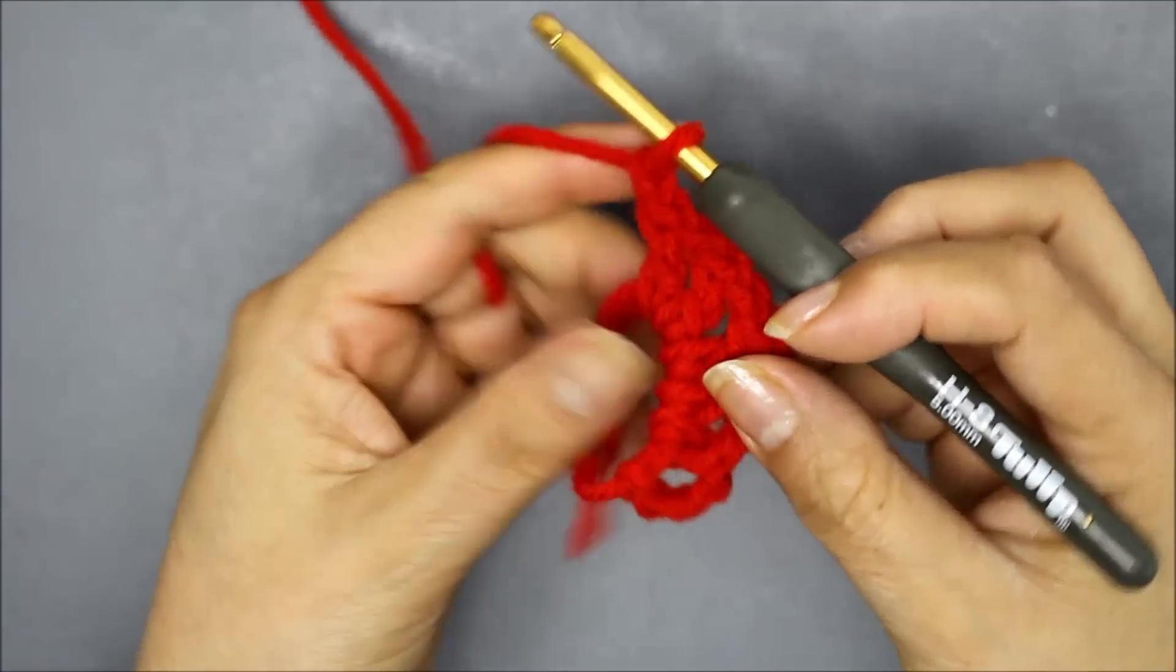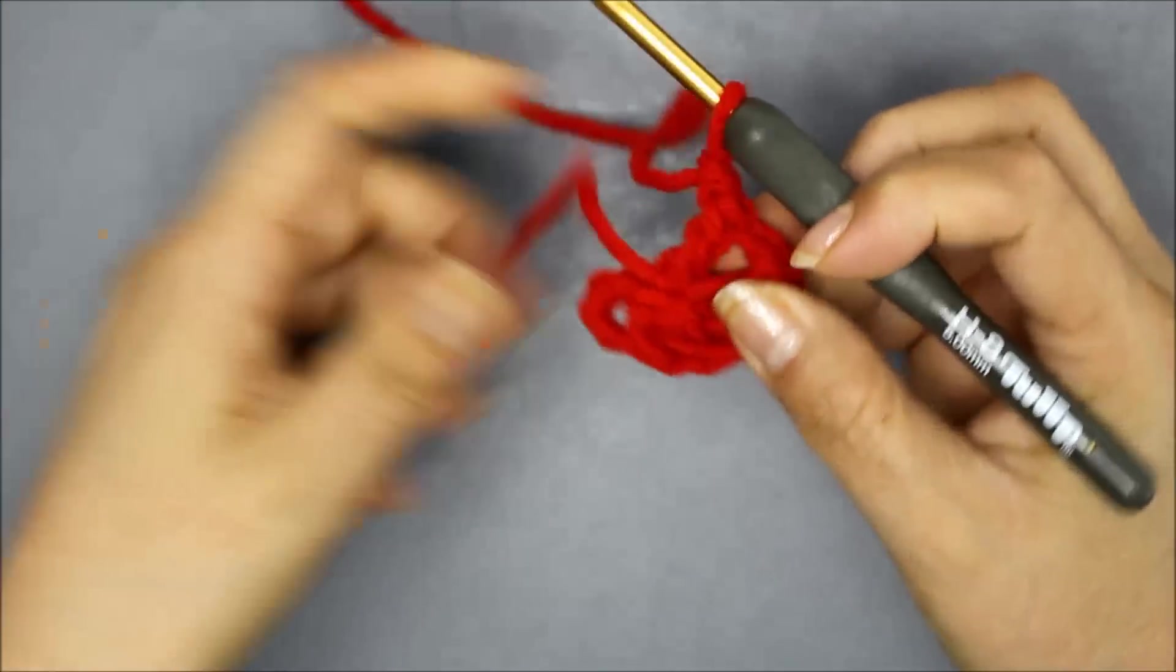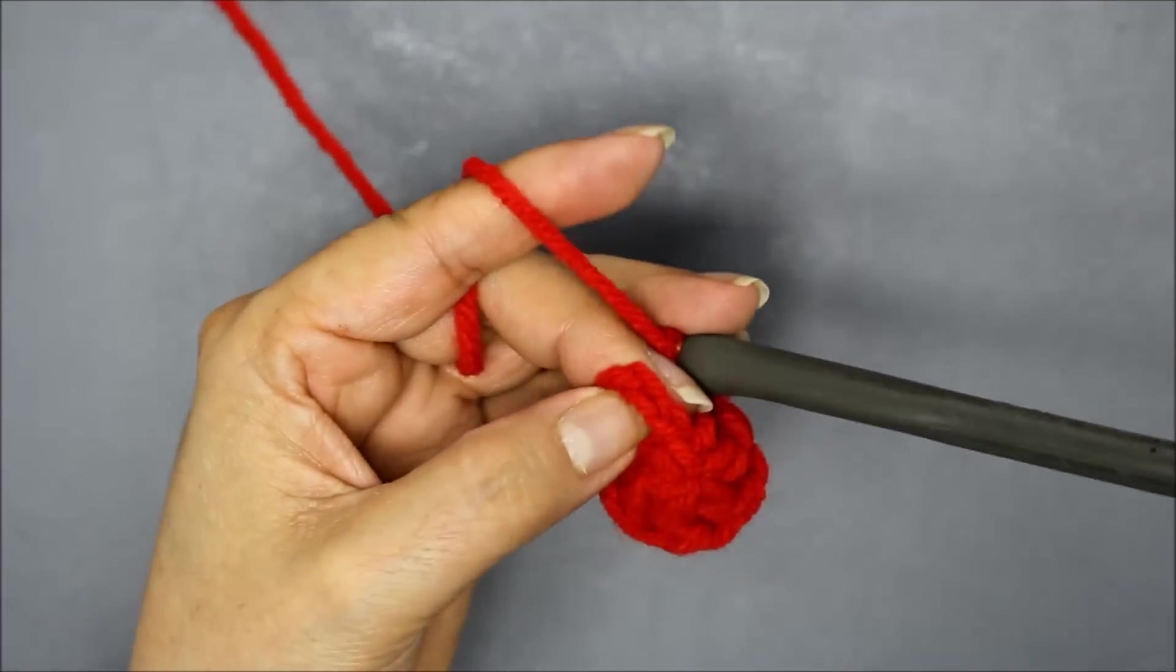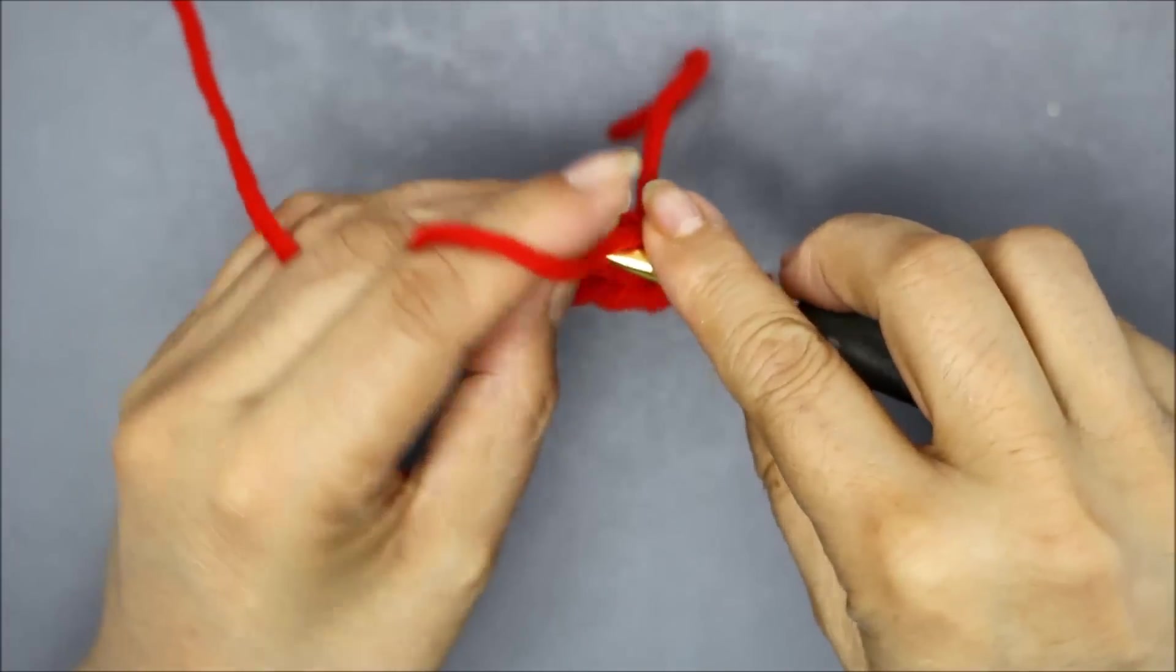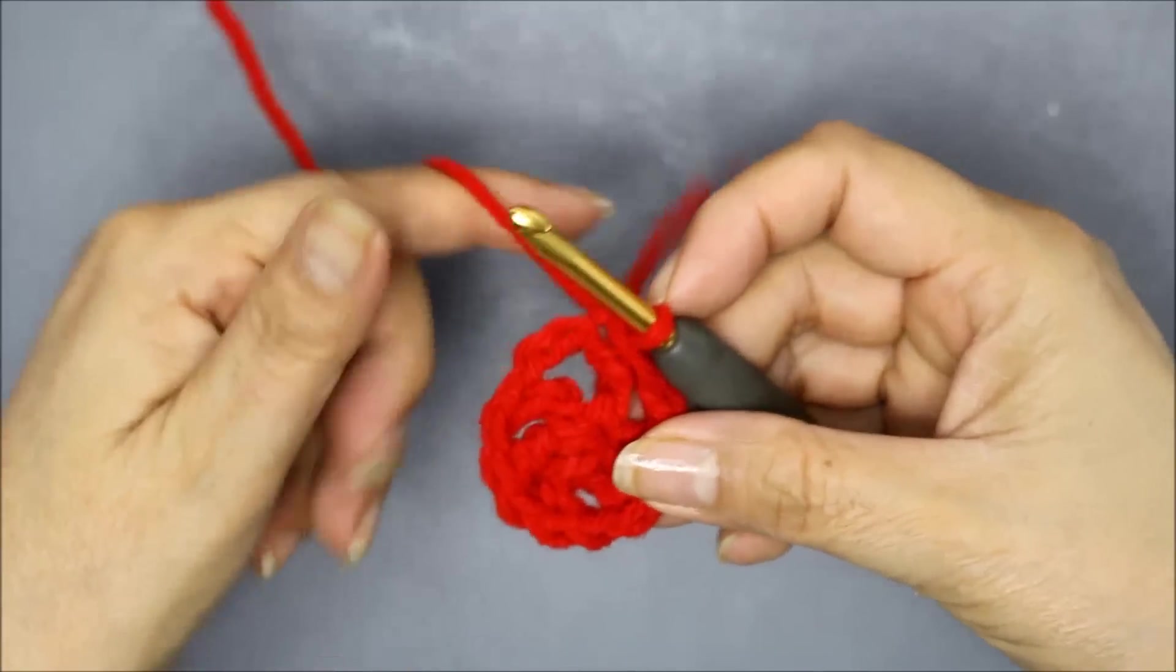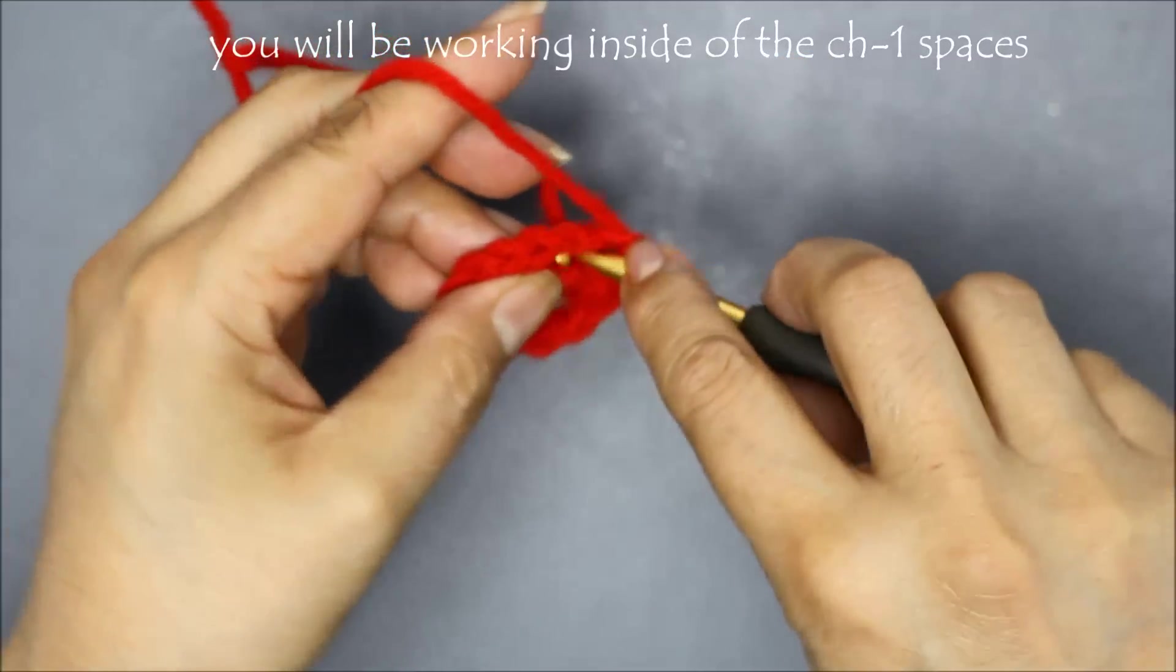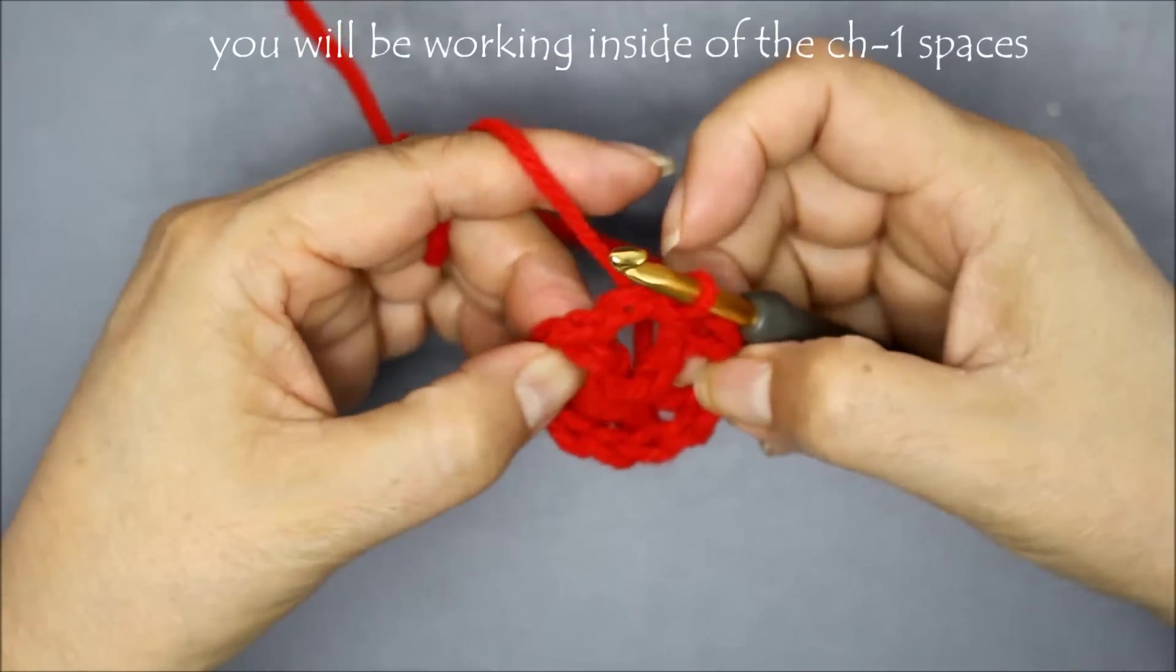So once I have that, I'm going to close this off. I'm going to slip stitch into the third chain. One, two, three. I'm going to slip stitch in there. Now I need to move into my spaces between my posts. So I'm going to slip stitch into that chain one space.